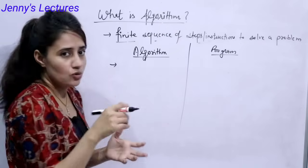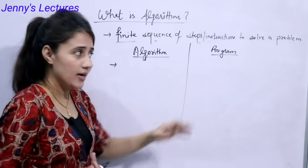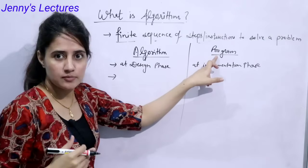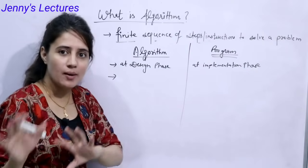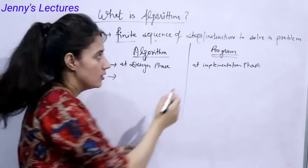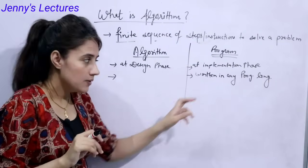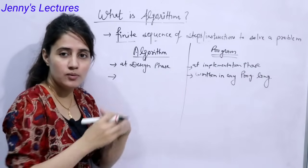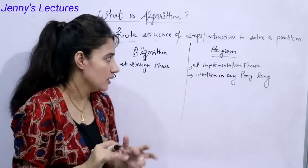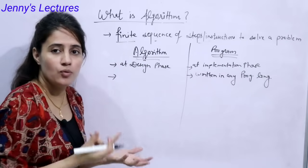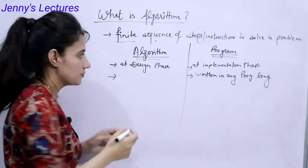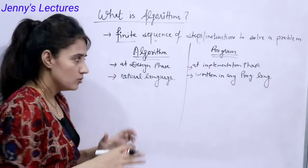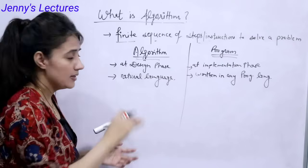Now the difference between algorithm and program: algorithms are required at the design phase, and programs are at the implementation phase. Programs are written in any programming language — C, C++, Java, Python — and must follow the proper syntax of that language, like using printf and scanf in C, or cout and cin in C++. But to write an algorithm you only need a natural language like simple English — no strict syntax rules to follow.